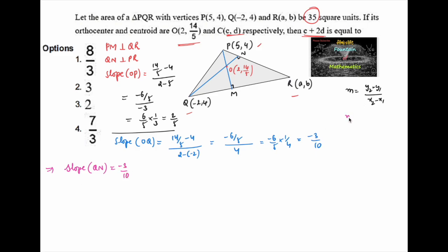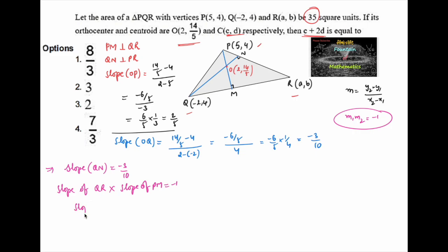We know the relation when two lines are perpendicular: m1 times m2 equals -1. So we can say slope of QR times slope of PM equals -1. Therefore slope of QR equals -1 divided by slope of PM, and slope of PM is the same as slope of PO, which is 2/5. So slope of QR is -5/2.